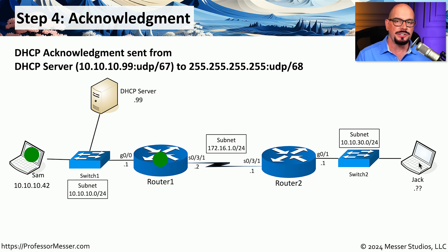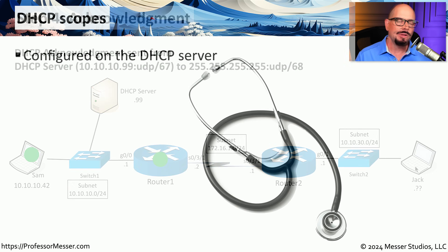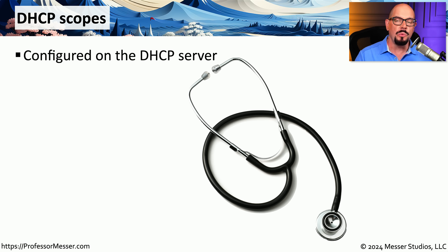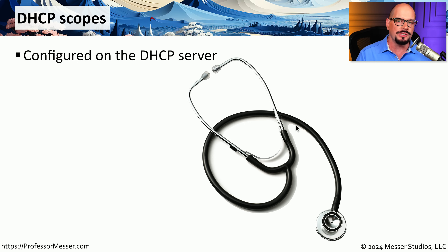This is the process that occurs for anyone connecting to the network, so when Jack turns on his computer, he will also go through that same four-step process. The DHCP server knew what IP address to assign to Sam's workstation because a predefined list of IP addresses was already configured on that DHCP server. We refer to that predefined list of IP addresses and all of the other configuration settings as a DHCP scope.